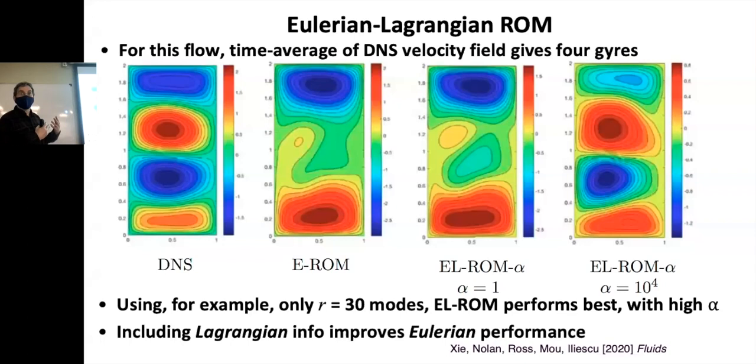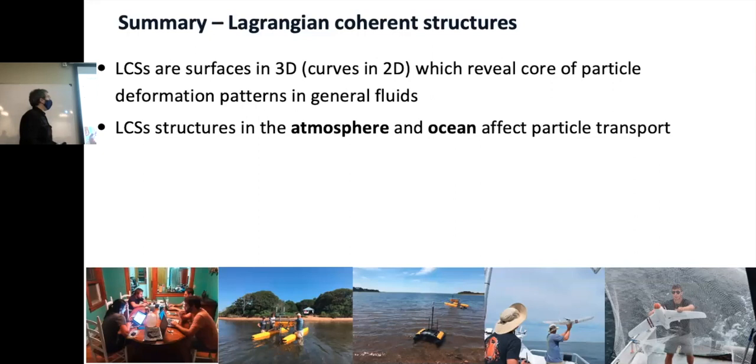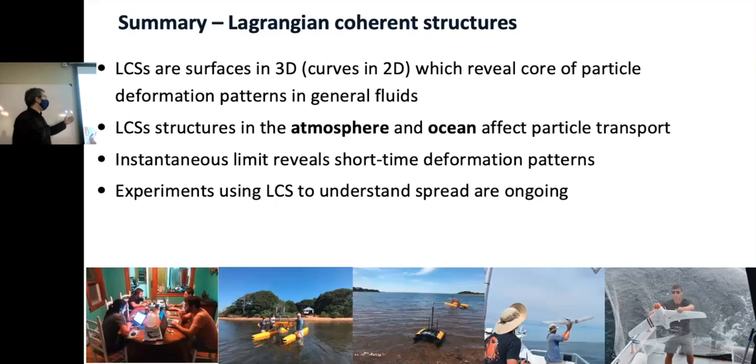So that's basically it. Hopefully you've learned something about what Lagrangian current structures are. There's surfaces in 3D, material surfaces, or just curves in 2D that reveal the core of particle deformation patterns in general fluids. I've done a lot of work in atmosphere and ocean, but I think there's plenty to be done with experimental fluid flows as well. The instantaneous time limit also reveals some interesting patterns. And at least the work that I'm doing, we're still looking at spread in environmental flow, so that's ongoing. And there's a lot of applications at the large scale, but possibly at the smaller scale as well. So that's it. Thanks.